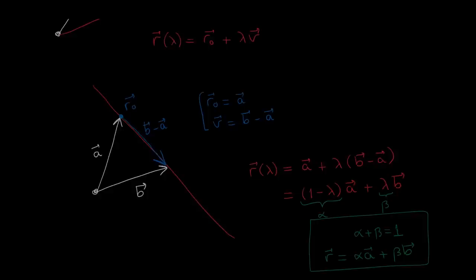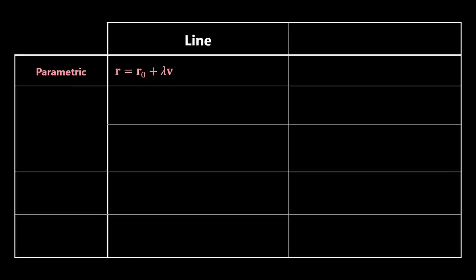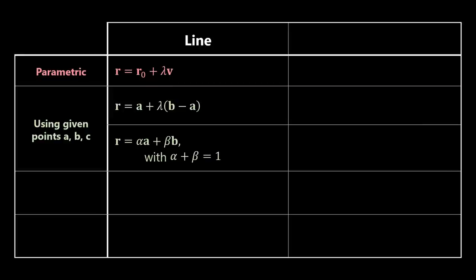We are starting to see that there are many ways of writing the equation of a line. So let's start doing a summarizing table. So far we have looked at the parametric equation of a line, and how to write it if we are given two points a and b, including the symmetrical form alpha a plus beta b with the condition on alpha and beta. Now we are going to continue filling up this table by looking at other ways of writing the equation of a line.